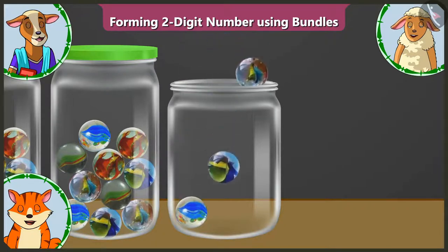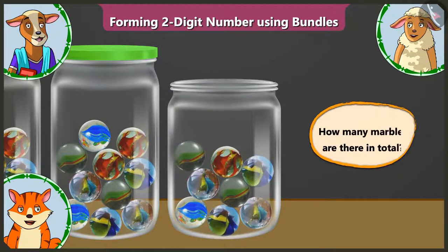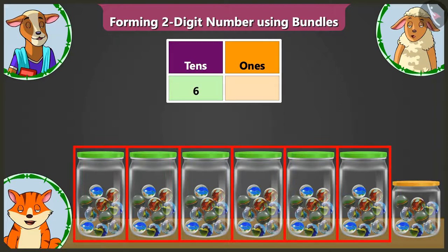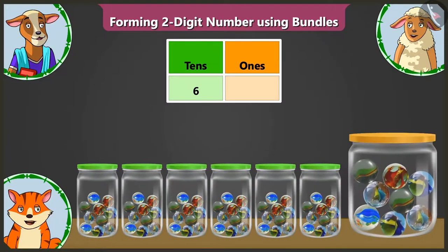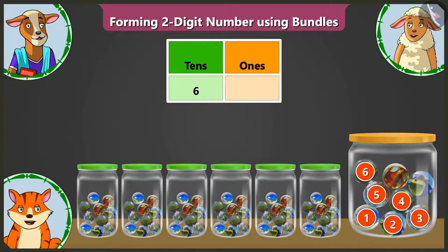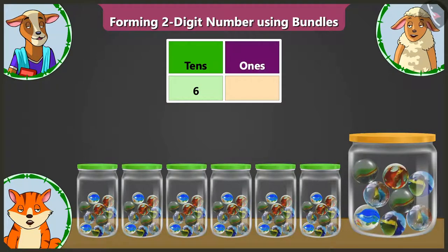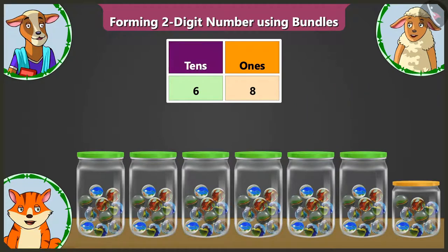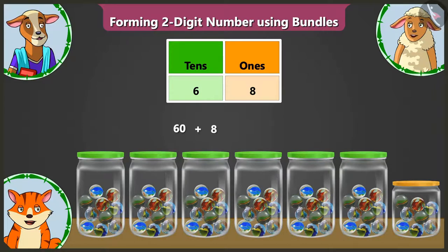In this empty seventh jar, I am putting some marbles in it. Now tell me, Lily, how many marbles are there in total? In the first six jars there are groups of 10 marbles each — 6 groups of 10. That is why in the 10s box we have to write 6. Well done, Lily. Now in the seventh jar we have put 1, 2, 3, 4, 5, 6, 7 and 8 marbles. So in the ones box we have to write 8. In the 10s box there is 6, which means 60 marbles. And in the ones box there is 8, that means 8 marbles. That is why there are 60 and 8, 68 marbles in total.